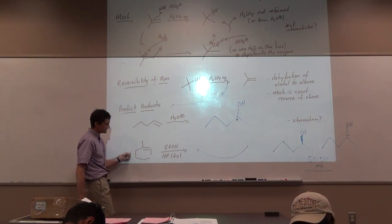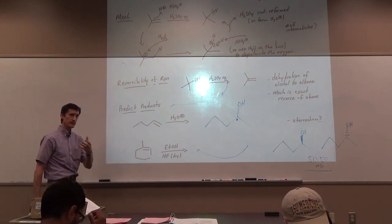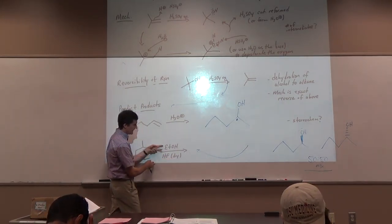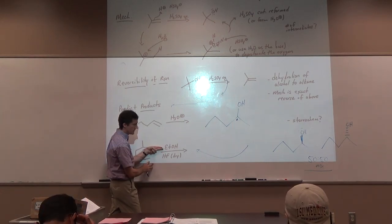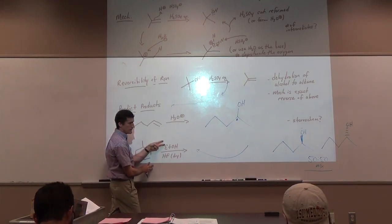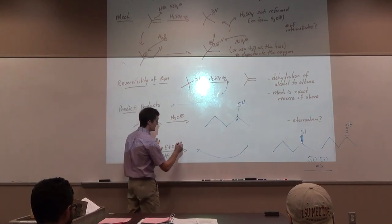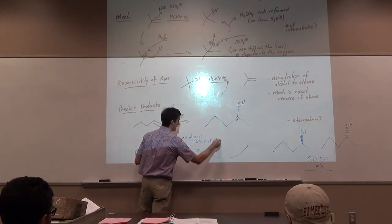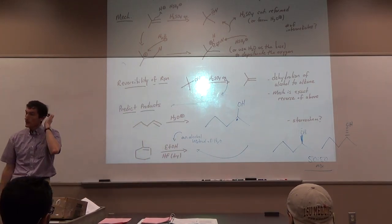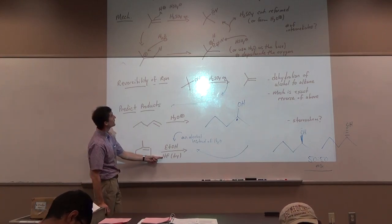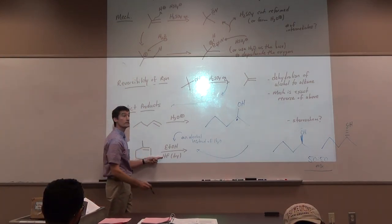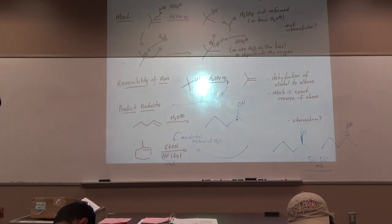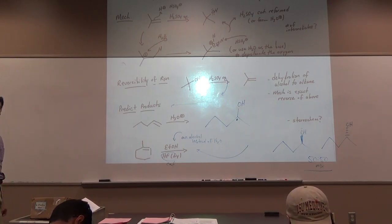Let's try the next one — it's a variation. I've got an alkene with HF and dry ethanol. This is the same thing except ethanol acts as the nucleophile instead of water, and HF is the acid catalyst. This is essentially H+ in ethanol.